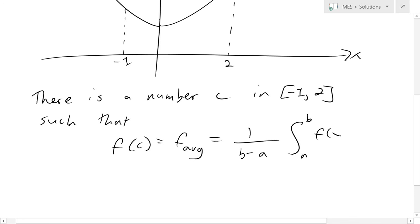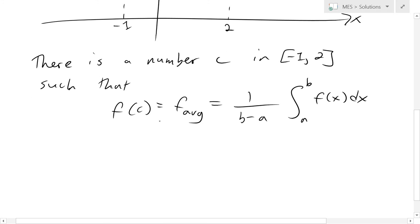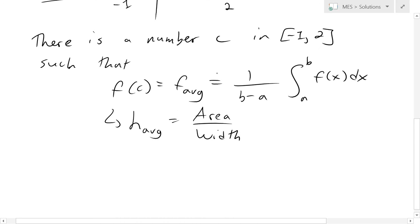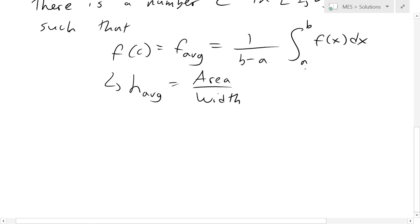So this is going to be the integral of f(x) dx. Where this f average is considered as the height, or h average. And this is pretty much saying area divided by width. So it's just saying average height equals area under the curve divided by width. That's pretty much the mean value theorem for integrals.